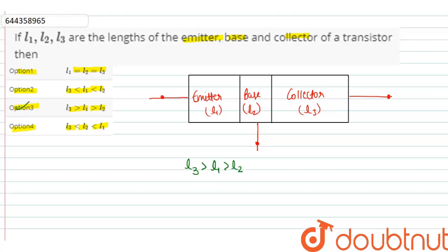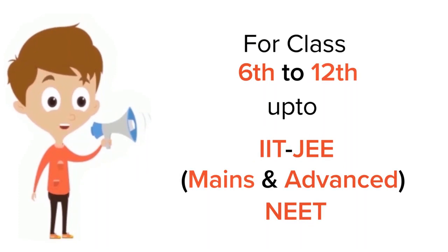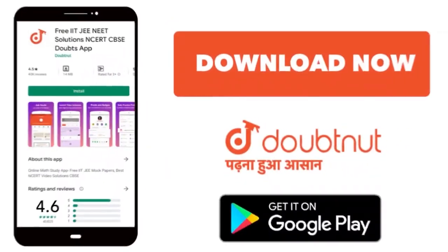The option number 3 is the correct answer. For Class 6 to 12, IIT-JEE and NEET level. Trusted by more than 5 crore students. Download Doubtnet app today.